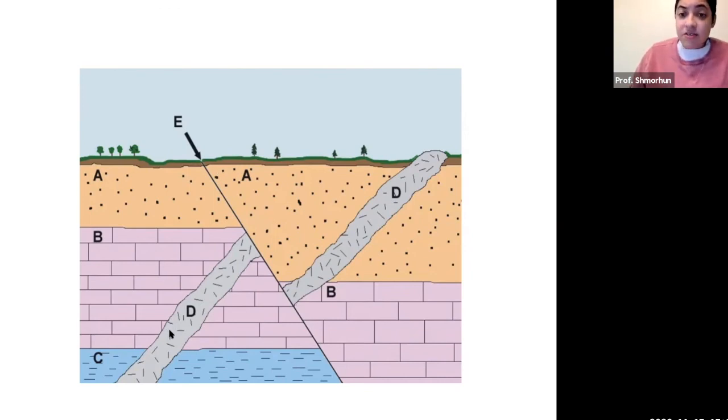So D cuts through formations C, B, and A, which is then offset by E. If we're ordering these events from oldest to youngest, it would be C, B, A - which were all originally deposited horizontally - and then D cut its way through.